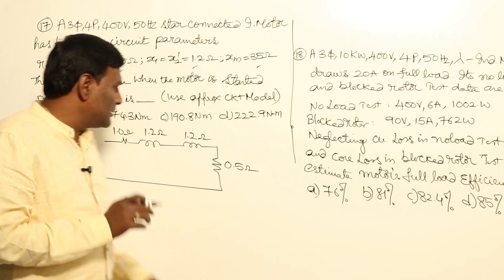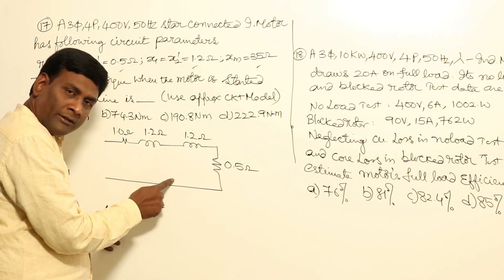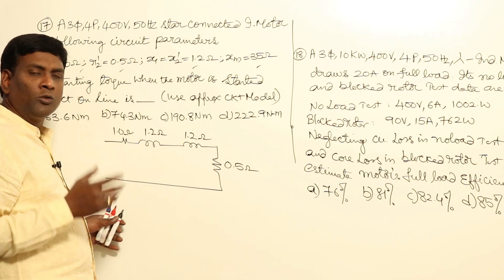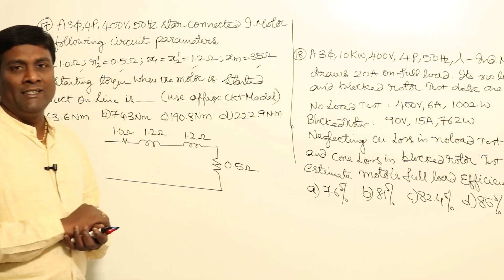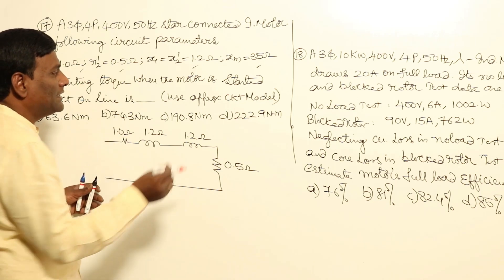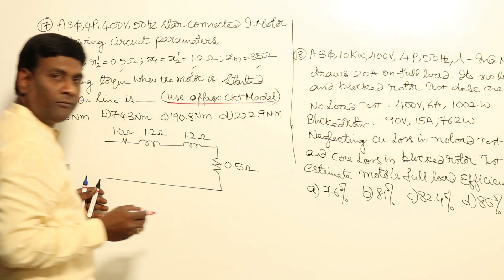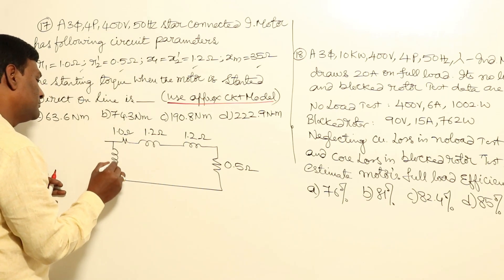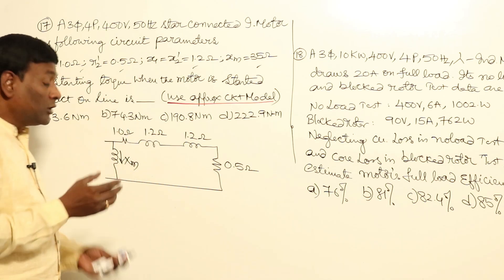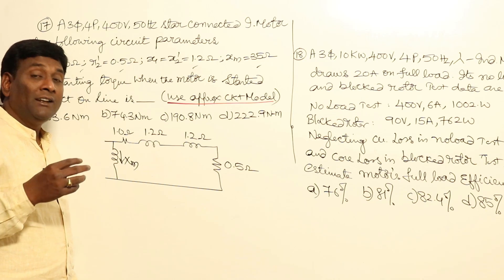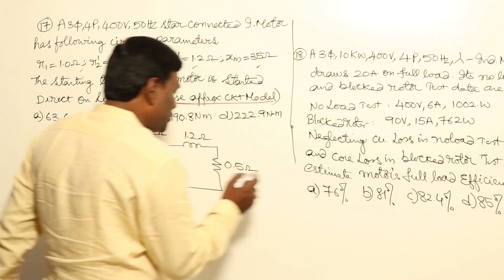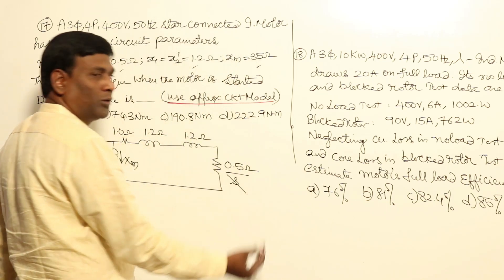In an induction machine, XM is drawn at the input terminals in the approximate model. RC, the core loss component, can be removed. He said to use the approximate model, so XM is kept at the front. Currents flowing through XM develop flux but do not develop torque. At starting, S equals 1, so R2 dash / S equals R2 dash.